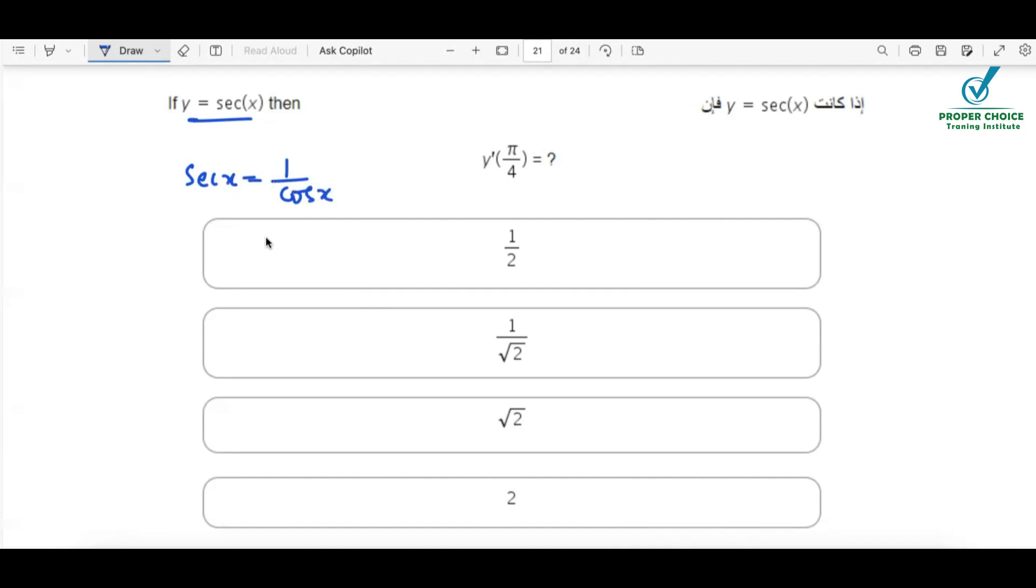So why am I doing so? Because we don't have a direct button for the secant on the calculator. So you need to replace secant with 1 by cos x and put x as pi by 4 in the calculator and find its derivative. You are done.